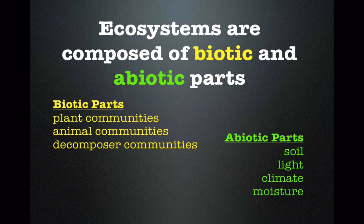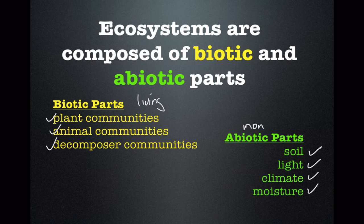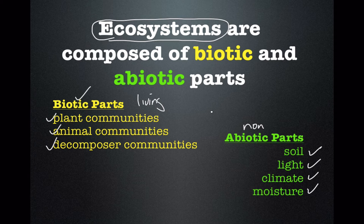Ecosystems are composed of biotic and abiotic components. The biotic parts are the plant communities, animal communities, and decomposer communities — biotic means living, including plants, animals, bacteria, fungi, and all the things that cause decomposition. And then there are the abiotic factors: the soil, light, climate, moisture levels — all the non-living things in the environment that control, limit, or set up a situation where living things can survive. So ecosystems are made up of communities, which are biotic, and the abiotic parts of the environment.